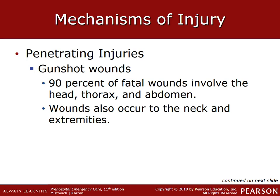Lung tissue is relatively tolerant of the cavitation caused by the projectile, as the numerous air-filled alveoli form a spongy mass that is easily movable. Pneumothorax is a common result of injury to the chest or lung, with air or a combination of air and blood escaping into the pleural cavity.